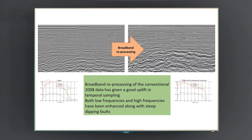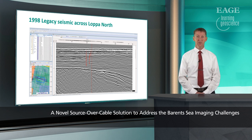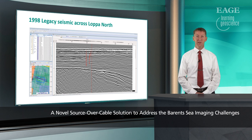We started by looking into legacy seismic data and reprocessing it. As you can see in this comparison, 1998 conventional legacy data has been reprocessed with both source and receiver de-ghosting, and we are able to obtain broader bandwidth — especially on the low and high frequencies — but we are still struggling with spatial sampling. Here is another example of 1998 seismic from the Loppa area, where you can see the Permian reflector and the carbonates underlying this erosional unconformity, but there is not particularly good imaging in those carbonate areas.